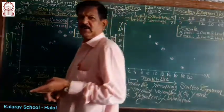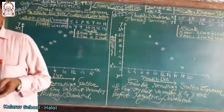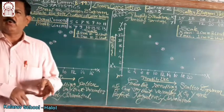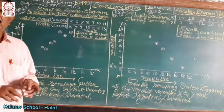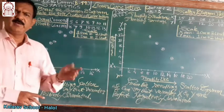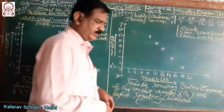Number 1, scatter diagram method. Number 2, Karl Pearson's coefficient of correlation, also known as the product moment method. And the third one, Spearman's coefficient of rank correlation.